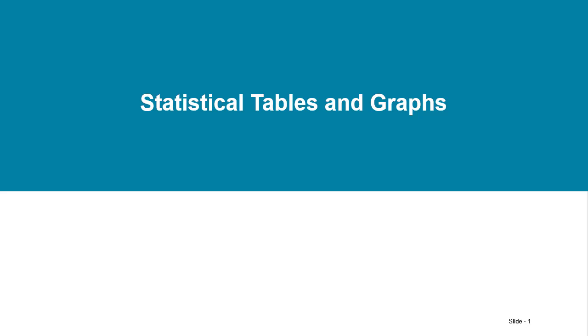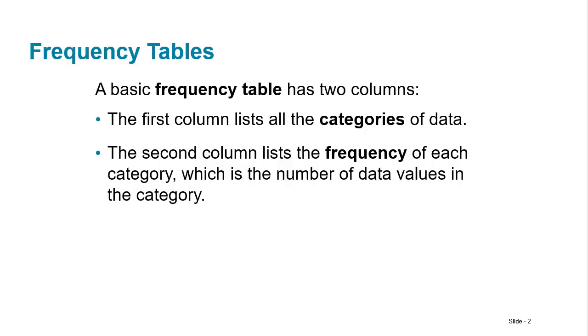Welcome to our short discussion on statistical tables and graphs. The first type of display of data is just a simple frequency table. The most basic type of frequency table just has two columns.